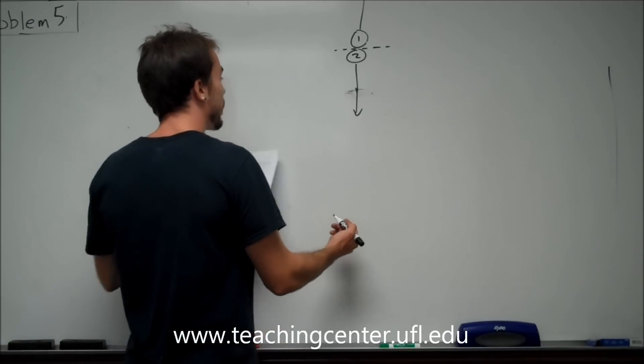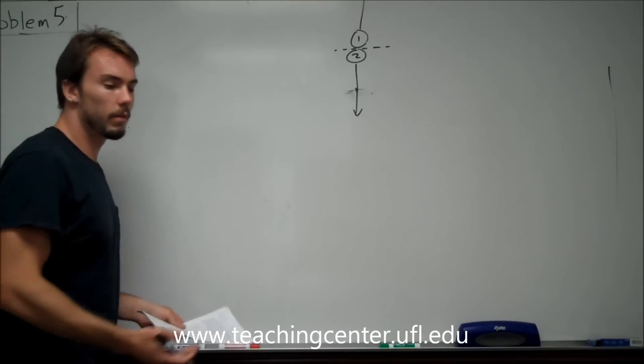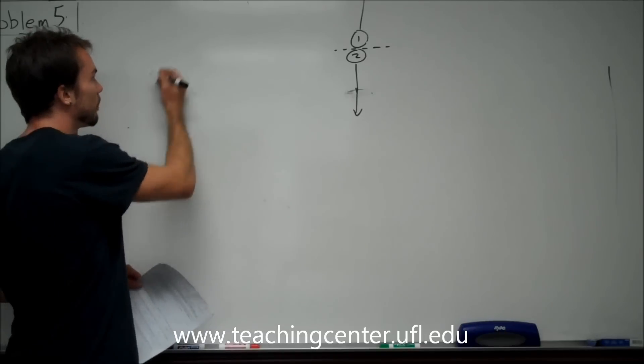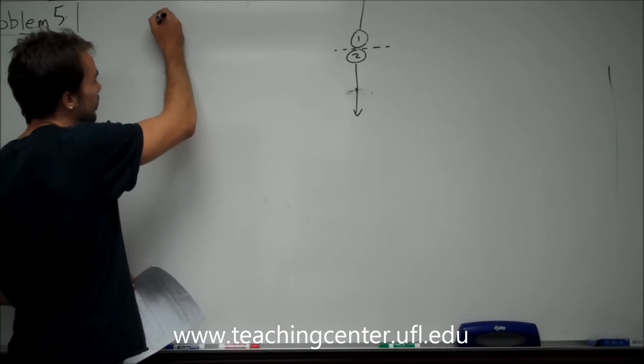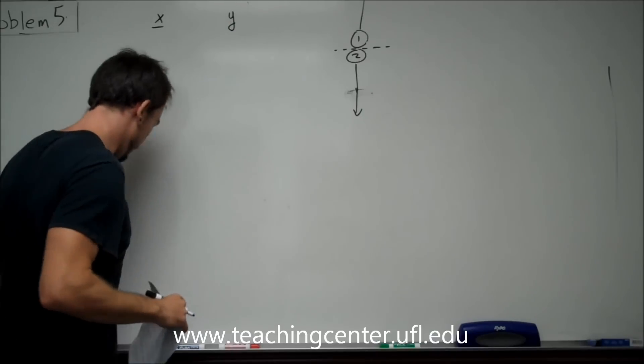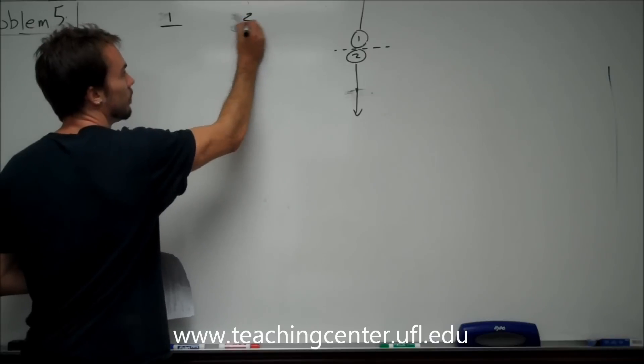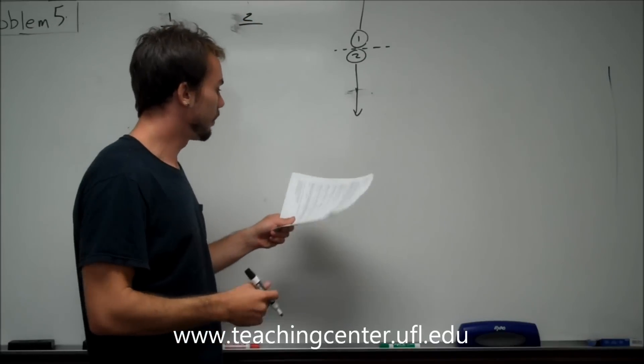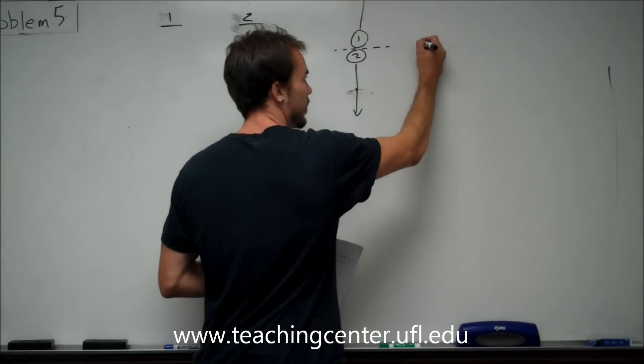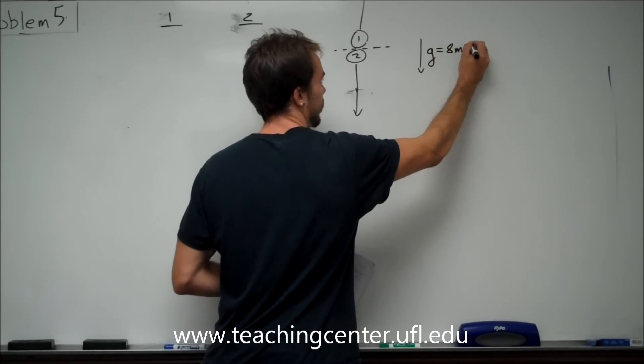Whenever you do these problems, I really highly recommend labeling out all your variables. We're going to do projectile motion. So, one and two. Over here we have, we know that our acceleration downwards, our gravity, is 8 meters per second squared.